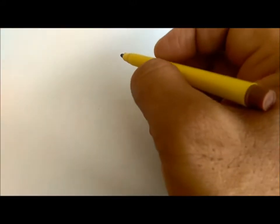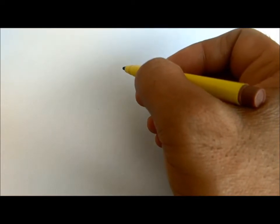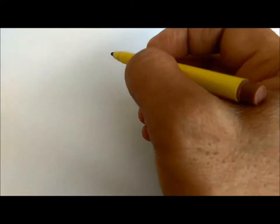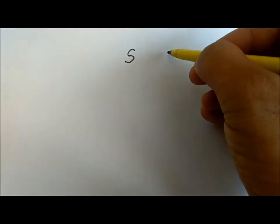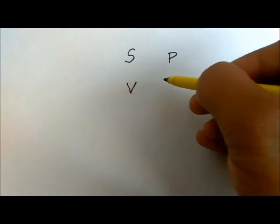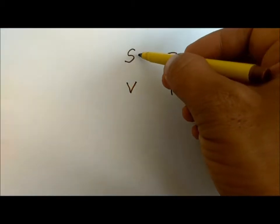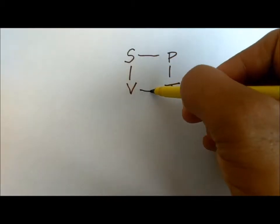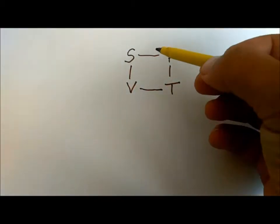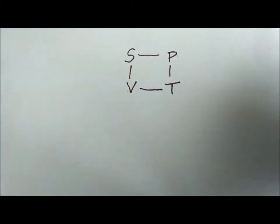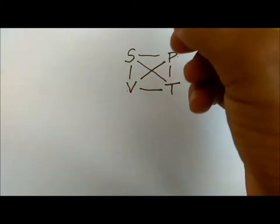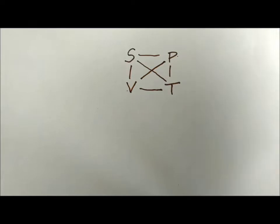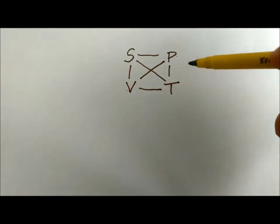Hello students, this is the third video in the series on basic concepts of thermodynamics. Today we will again use the same mnemonic — smart people very talented — but we will make only one square. This is the shortcut. Today we will learn about Maxwell relations.